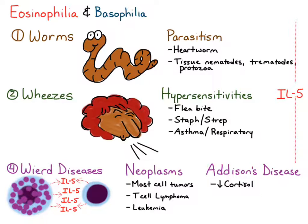So there you have it. The causes of eosinophilia and basophilia include worms, wheezes, and weird diseases. That includes parasitism — specifically tissue parasites — various hypersensitivity reactions, and of the weird diseases, mast cell tumors and T cell lymphoma are most common.